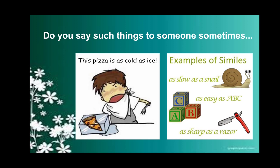This pizza is as cold as ice. Pizza is not just like ice, but because ice is cold and if the pizza is also cold, we compare them — it is as cold as ice. Similarly, we can say 'as slow as a snail' for a person who works slowly, 'as easy as ABC' for something very easy, and 'as sharp as a razor' for a person who speaks bluntly.